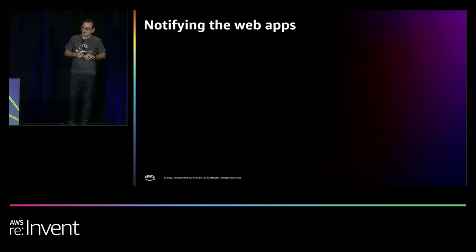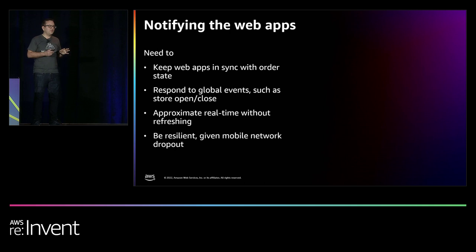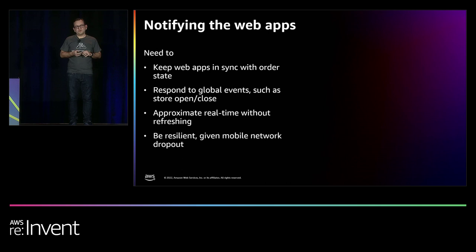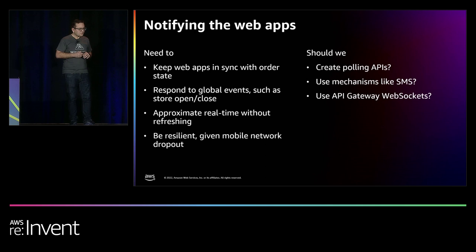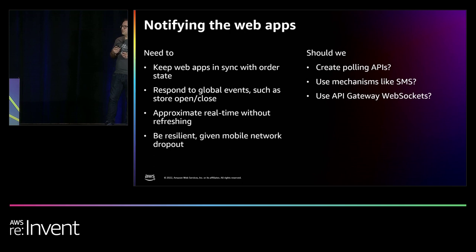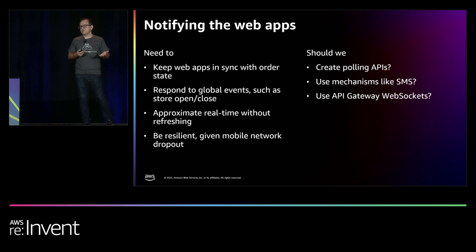At this point we had a way for the order workflow to start and interact with orders, but nothing kept the front ends up to date. We needed to keep the web apps in sync, respond to issues like the store opening and closing, do this as close to real-time as possible, and be resilient enough to handle network dropouts on cell phones at conferences with Wi-Fi. We looked at several options: a polling API where front ends poll with a transaction ID, SMS notifications, or API Gateway WebSockets.